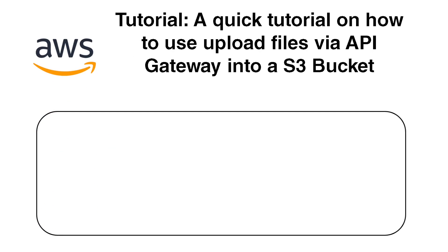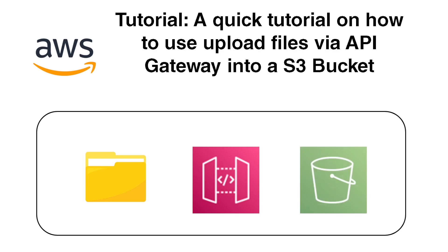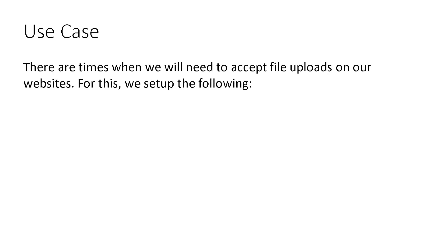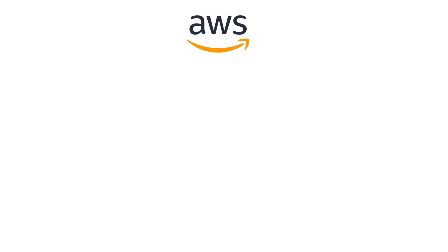In this demo we're going to go over a quick tutorial on how you can upload files via the API Gateway into an S3 bucket. First we'll start off with the use case: there are times when you will need to accept file uploads on your website. You can create an S3 bucket that will hold all your files, and use API Gateway to create a REST API that will accept PUT requests for those file uploads.